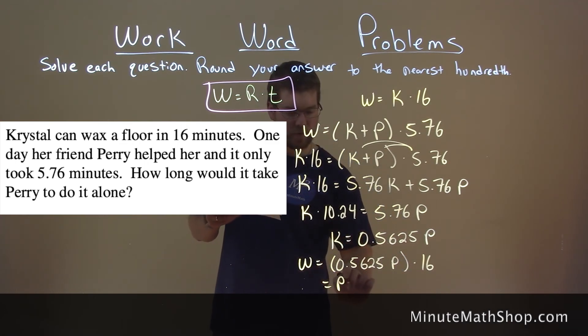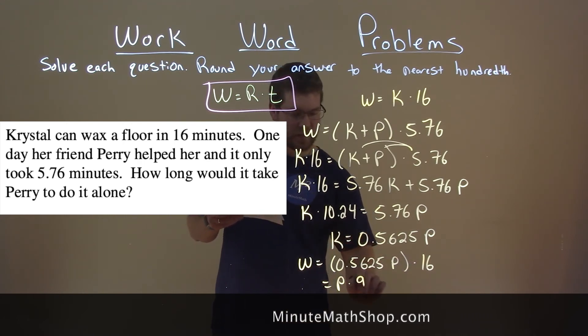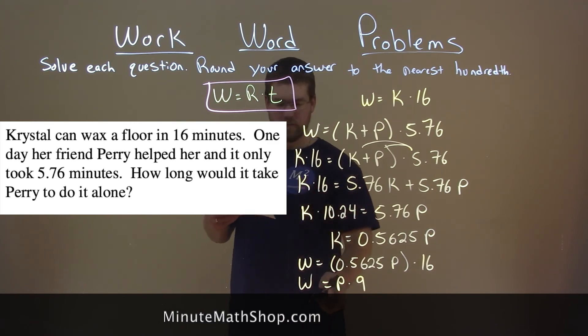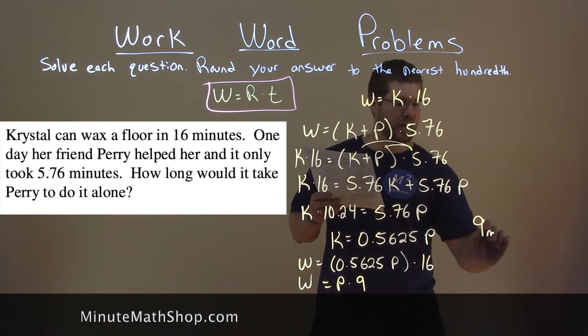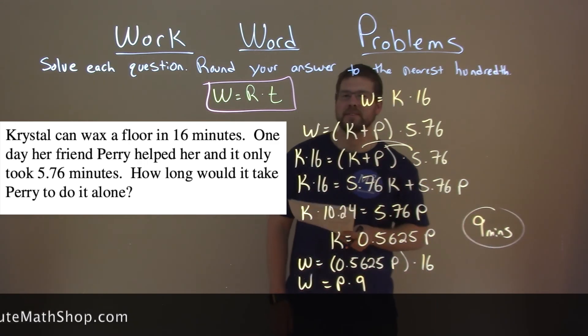So we have p comes first times 0.5625 times 16 is actually 9. And now we have that's set up for work for Perry. And so our answer is just 9 minutes. And it will take Perry 9 minutes to do it alone.